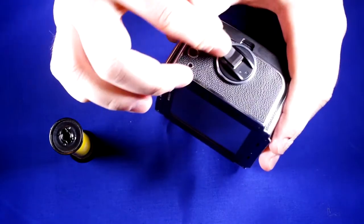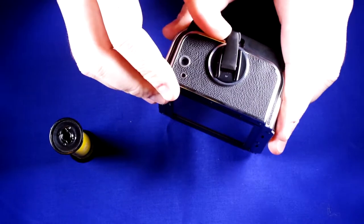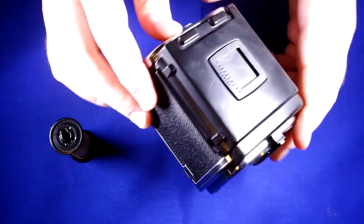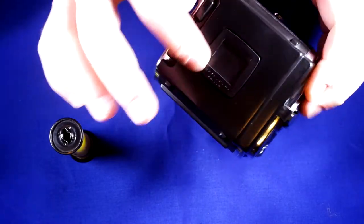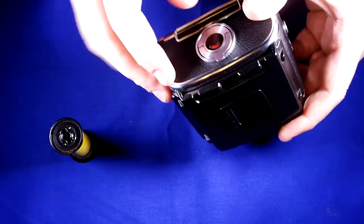Here is the film advance lever that we are going to use in just a minute or two. This is the frame count window and the shutter cocked indicator. And on the back here we have a film memo holder and the film back holder as well.